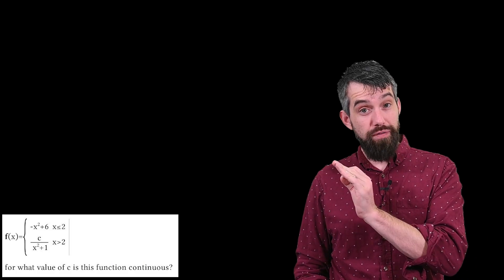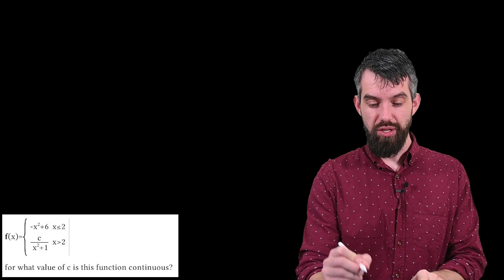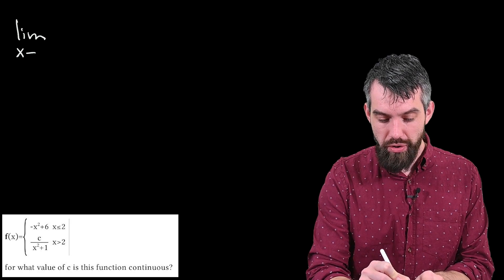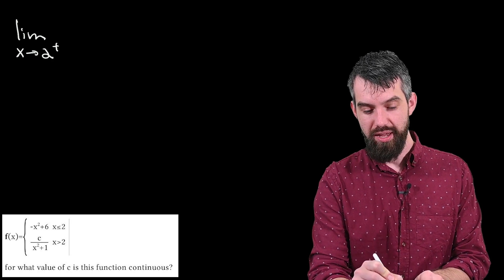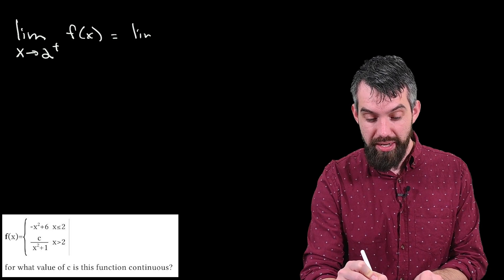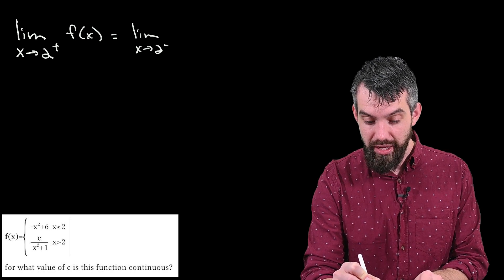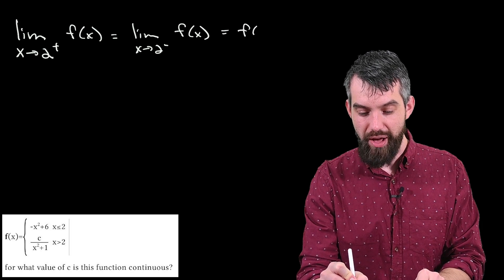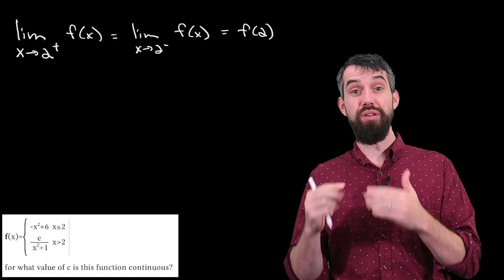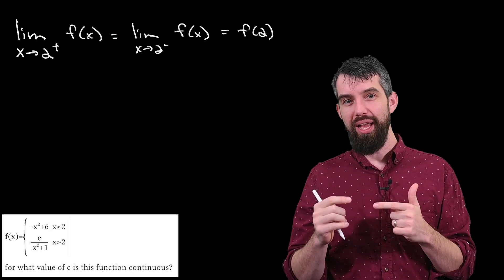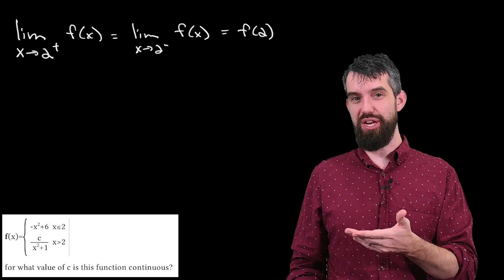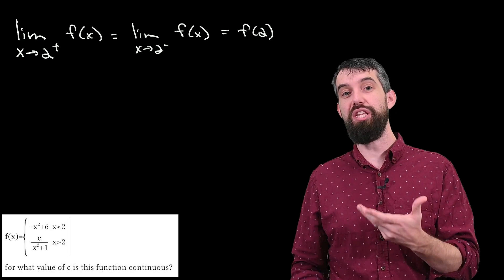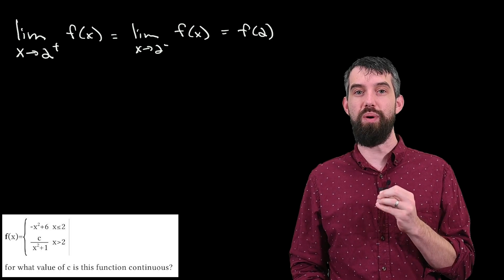I want the limit and the function value to be the same thing at all points. The interesting spot is the value of 2, where the function is defined differently on each side. I want the limit as x goes to 2 from the right of f(x) to equal the limit as x goes to 2 from the left of f(x), and that all equals the function value at 2. Away from 2, the functions are clearly continuous — they're rational functions with no zero in the denominator — so the only possible problem spot is at x = 2.